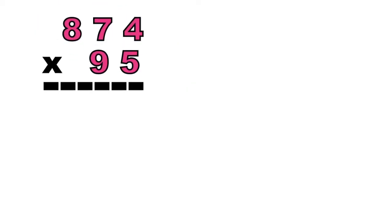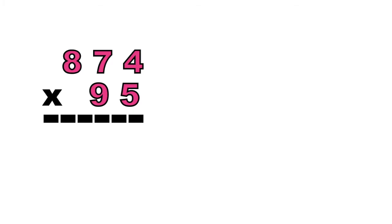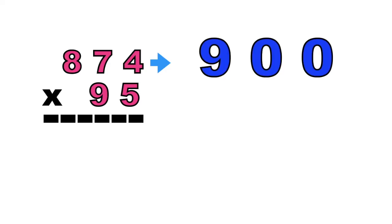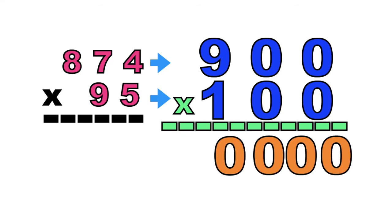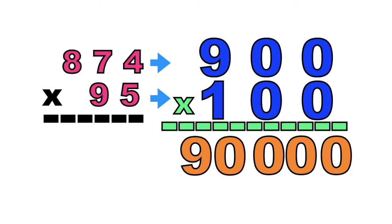How about if we have 874 times 95? Let's estimate the first factor. 874 will become 900. How about 95? It will become 100. So let's multiply them. How many zeros are we going to write? We need to write 4 zeros. Then let's multiply the non-zero digits: 1 times 9 equals 9. So the estimated product of 874 and 95 is 90,000.